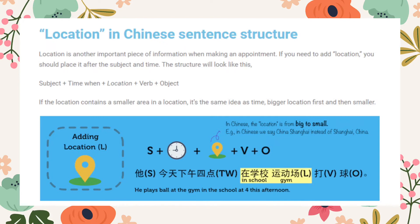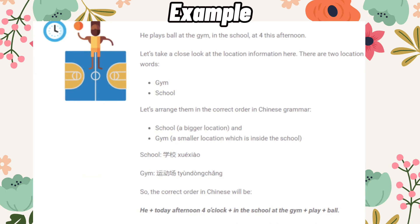For location in Chinese sentence structure, location is another important piece of information when making an appointment. If you need to add location, you should place it after the subject and time. The structure will look like this: subject plus time when plus location plus verb plus object. If the location contains a smaller area within a bigger location, bigger location comes first, then smaller. For example: 'he plays ball at the gym in the school at 4 this afternoon.' School is the bigger location while the gym is the smaller location inside the school, so the order is: he plus today afternoon four o'clock plus in the school at the gym plus play plus ball.